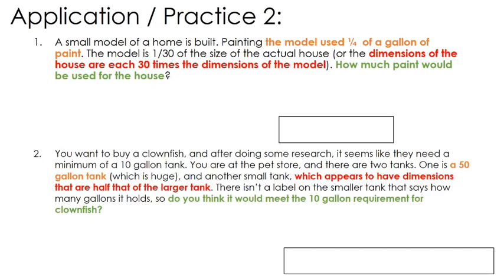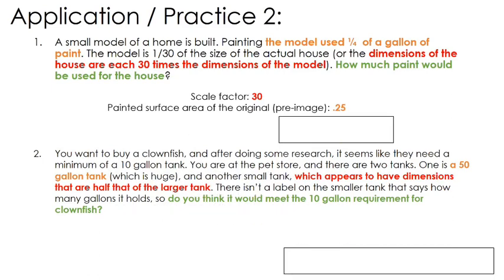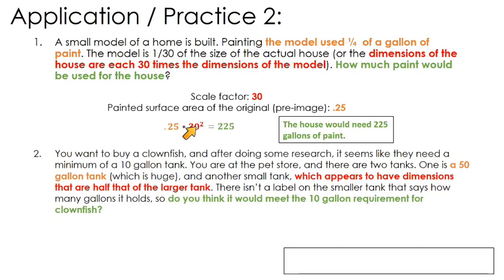You might be tempted to do one-fourth times 30, because your new house is 30 times bigger. But keep in mind, if 30 is your scale factor, that's not what relates to the surface areas. You have a scale factor of 30, and one-fourth, or 0.25, is how much paint was used on the pre-image. So you take 0.25 and multiply it by 30 squared, because we're talking about surface areas. By doing that you get 225 — that would be the corresponding amount of paint you would need to paint your full-sized house. For areas, you multiply by the square of the scale factor.